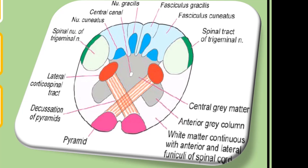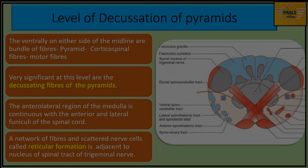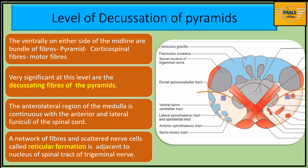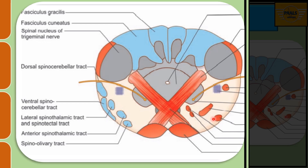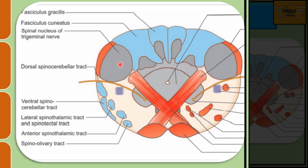When we trace this nucleus proximally, it rises up to the level of the upper part of the pons. Moving ventrally, the very prominent structures are the pyramidal fibers — both the corticospinal and the corticobulbar fibers. A very significant event here is the crossing of these fibers from the pyramid, which is the pyramidal decussation. Adjacent to the spinal nucleus of the trigeminal nerve, we see a network of fibers with scattered nerve cells called the reticular formation.